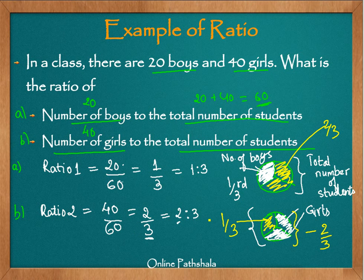Another important thing to note is that if we add ratio 1 and ratio 2, it comes to 1, which is quite simple to observe. 1 by 3 plus 2 by 3 gives 3 by 3, which is nothing but 1.